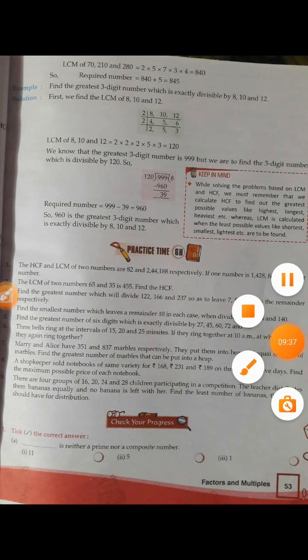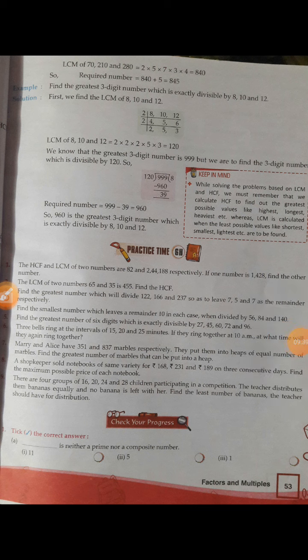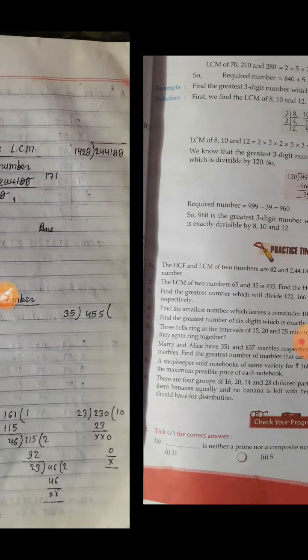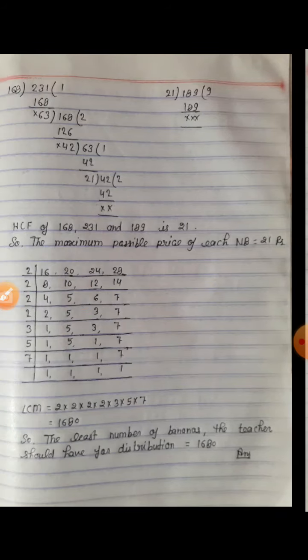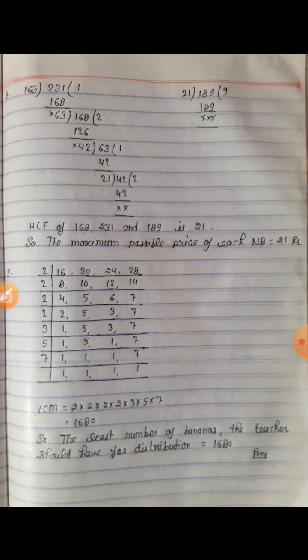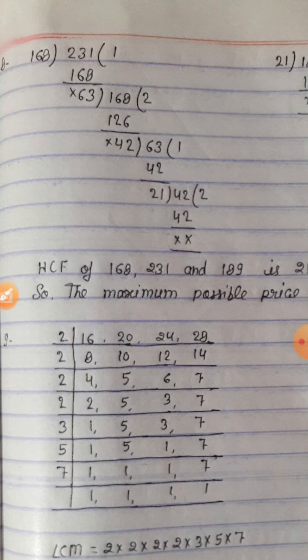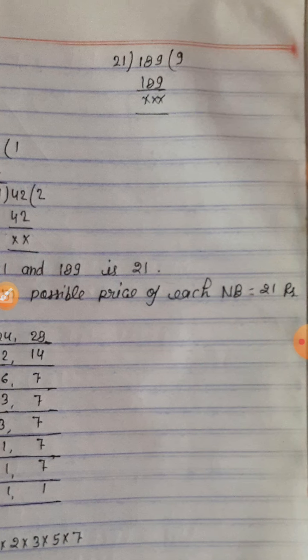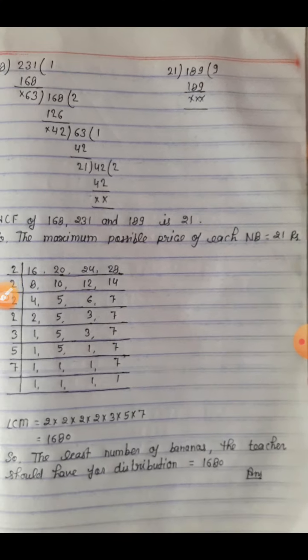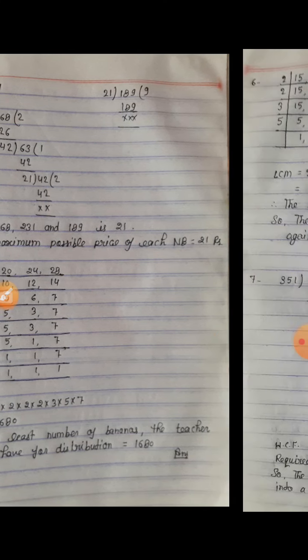Question number 8: Notebooks of the same variety were sold for ₹168, ₹231, and ₹189 on three consecutive days. Find the maximum possible price of each notebook. Maximum के लिए HCF निकालेंगे। HCF division method से करने पर आता है 21. The maximum possible price of each notebook is ₹21.